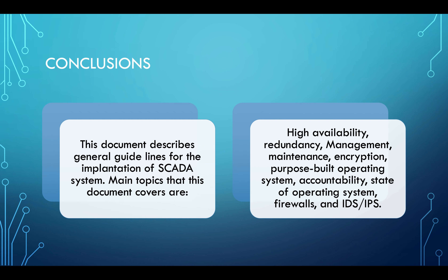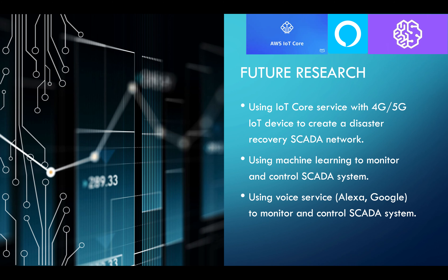In conclusion, this document describes general guidelines for the implementation of a SCADA system. The main topics covered are: high availability, redundancy, management, maintenance, encryption, purpose-built operating system, accountability, state of operating system, firewalls, and IDS/IPS.